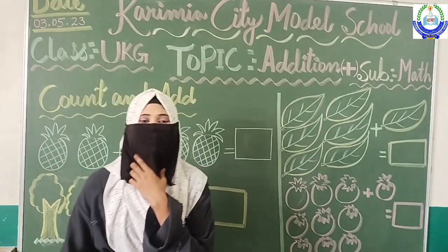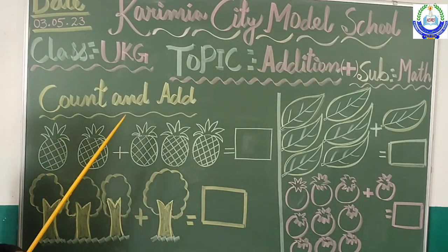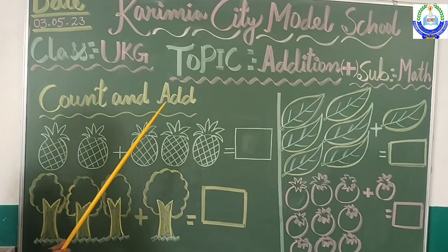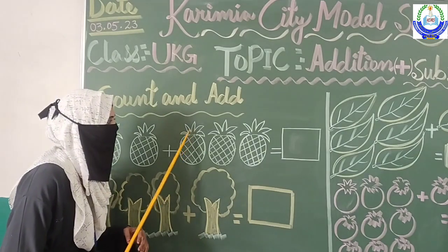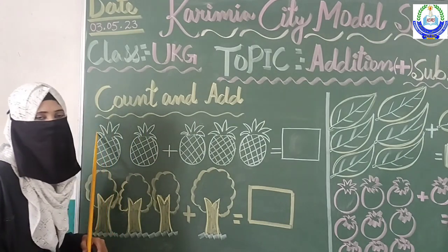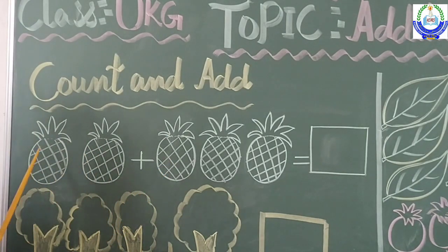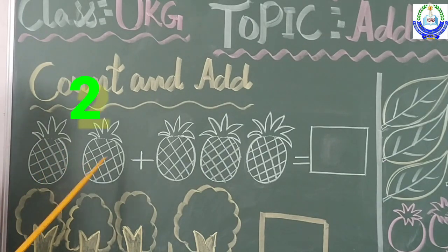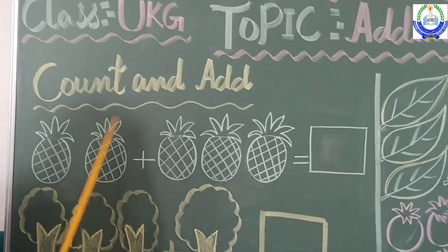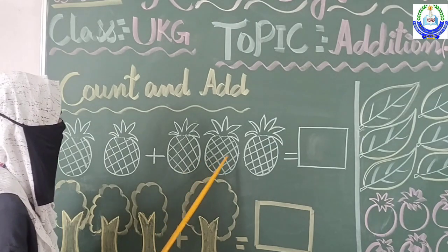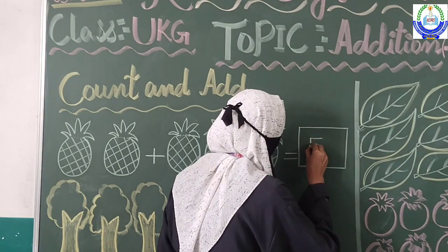Without wasting time, let's start our topic — addition — with the help of some pictures. What are these, students? These are pictures of pineapples. How many pineapples are there? Let's count them: 1, 2. There are 2 pineapples, plus 1, 2, 3 — there are 3 pineapples. So let's count them all: 1, 2, 3, 4, and 5. We will write here: 5.